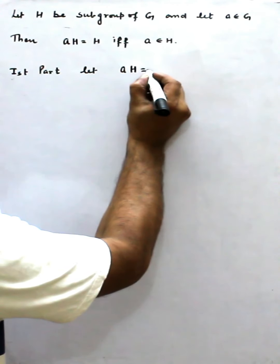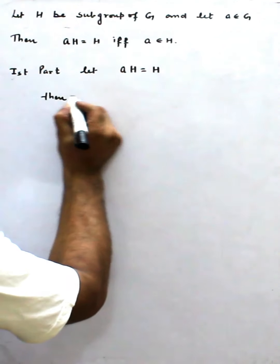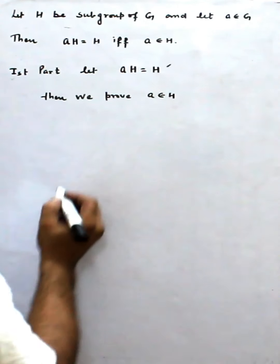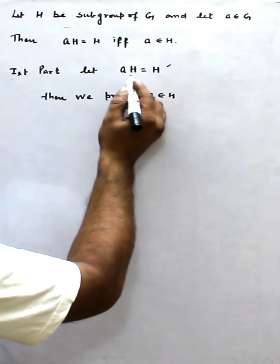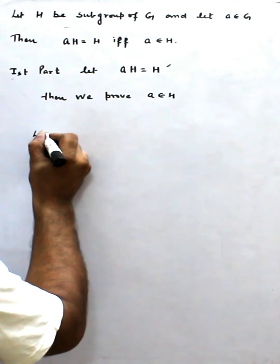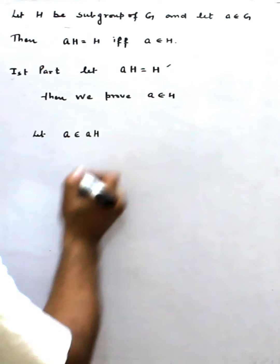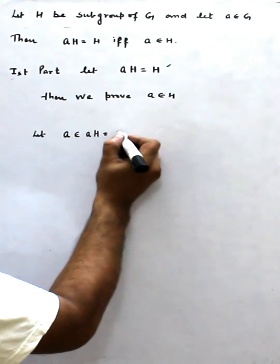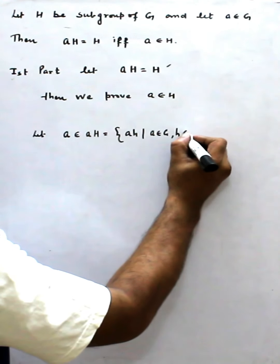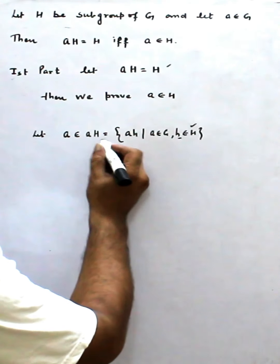First part: let AH be equal to H. We suppose this is given, and then we prove A belongs to H. We can take any element from AH. We have shown that A belongs to AH, because in this set the elements are of the form AH where A belongs to G and H belongs to H. Since H is a subgroup, H can be taken as the identity.